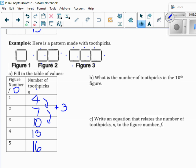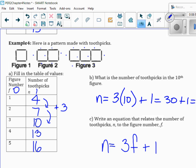What is my starting amount at 0? That would be 1. So, putting it all together, the number of toothpicks would be 3 times the figure number plus my initial amount, which is 1. So, if I want to find the 10th figure, that would be 3 times 10 plus 1. So, 30 plus 1 gives me 31.